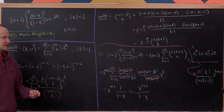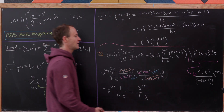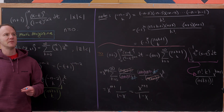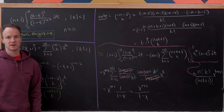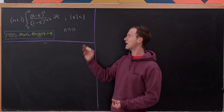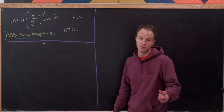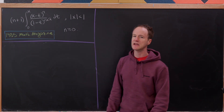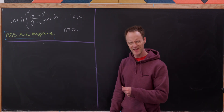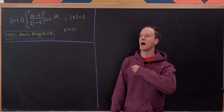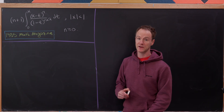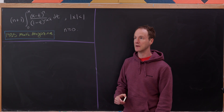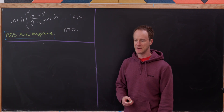That's our first approach — direct but relying on knowledge of that beta-function integral. Let's now look at a simpler but less direct approach. Solving the same problem two different ways can reveal a lot about the mathematics involved.